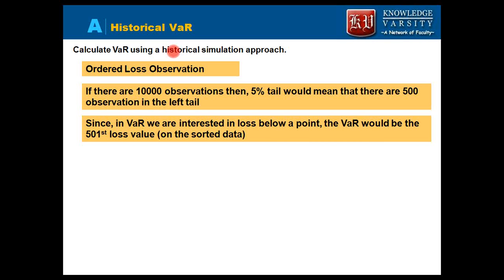In historical VaR, we order loss observations. If there are 10,000 observations and we want the 5% VaR, the 5% tail implies there are 500 observations in the left tail.